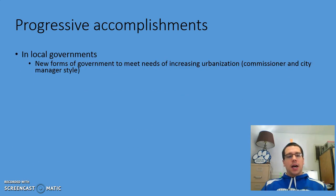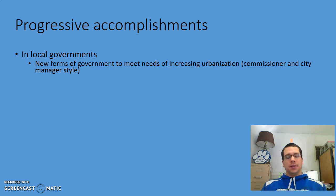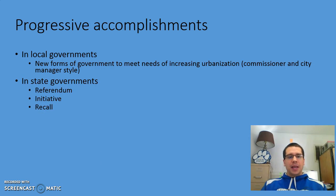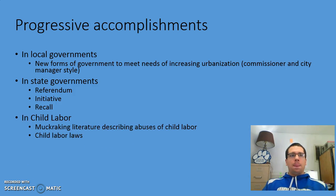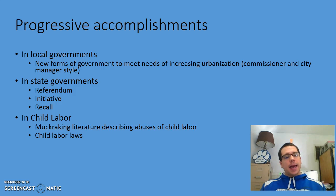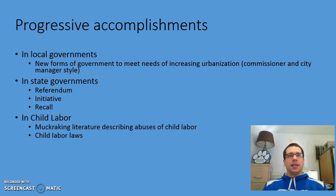We see accomplishments in local governments — new forms like commissioners and city managers addressing tenements, sanitation, and public transportation. In state governments, tools like the referendum, initiative, and recall gave more people a political say. Child labor was slowly phased out, largely due to muckraking newspaper journalists describing the abuses of child labor and making people see that it was wrong.